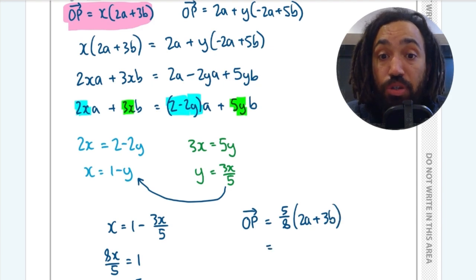And then all that's left to do is expand those brackets to get a simplified version of the vector OP in terms of A and B.